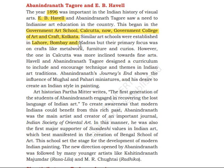The schools established in Lahore, Bombay, and Madras did not give attention to fine arts — they focused on metalwork, furniture, and similar crafts. The school in Calcutta, on the other hand, gave more attention to fine arts such as painting and sculpture.